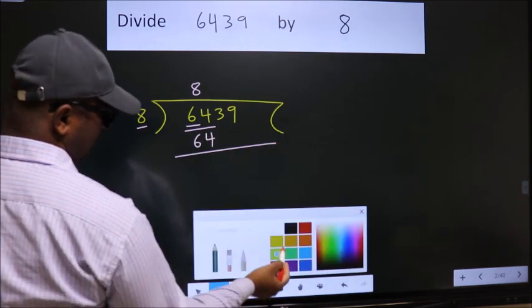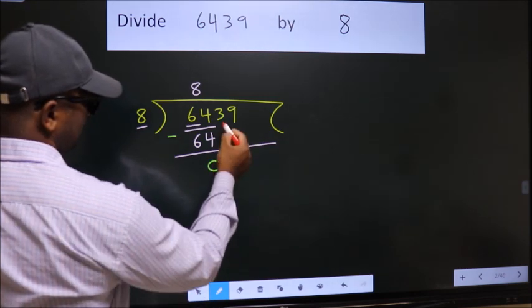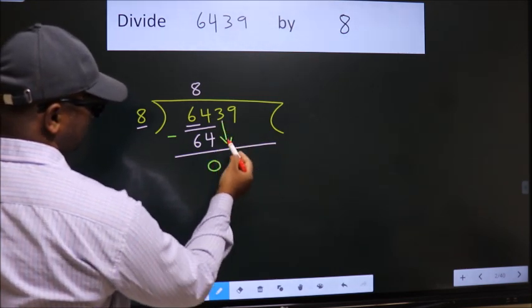Now, we should subtract. We get 0. After this, bring down the beside number. So, 3 down.